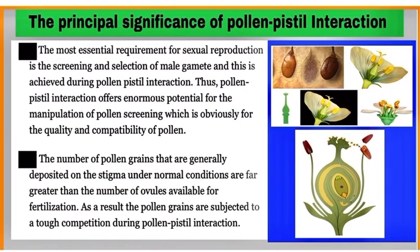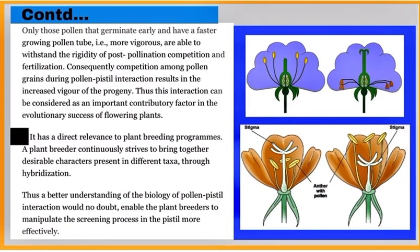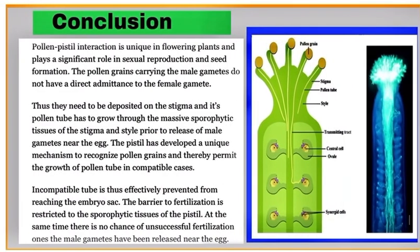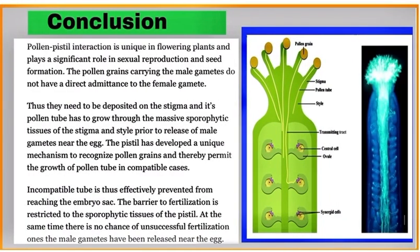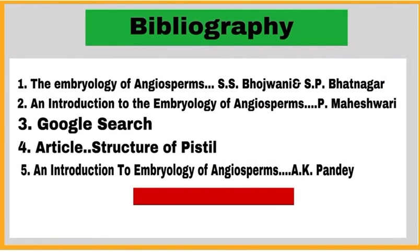The principal significance of pollen pistil interaction is that it has direct relevance to plant breeding programs. Now conclude the project and write the bibliography.